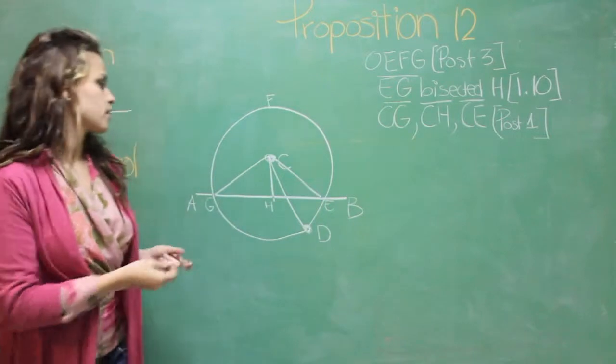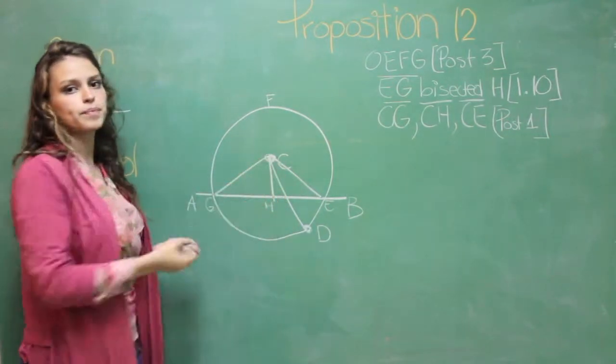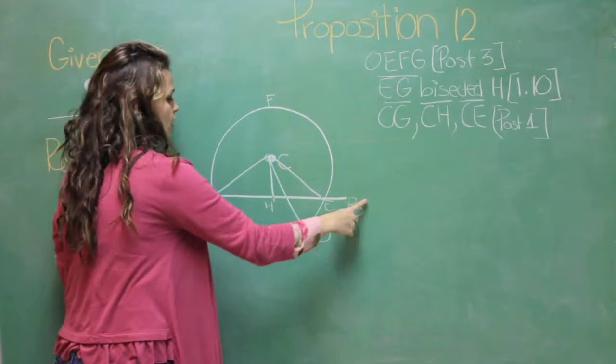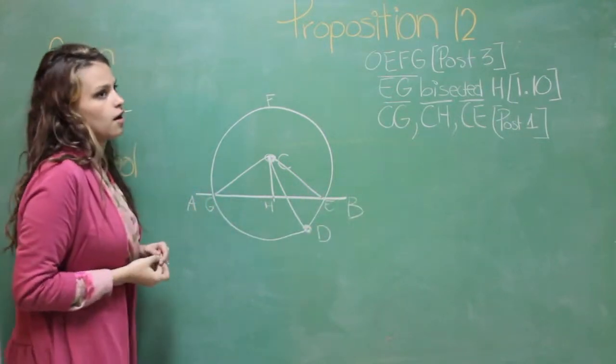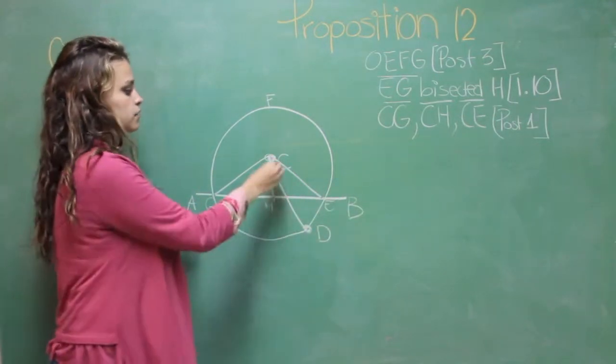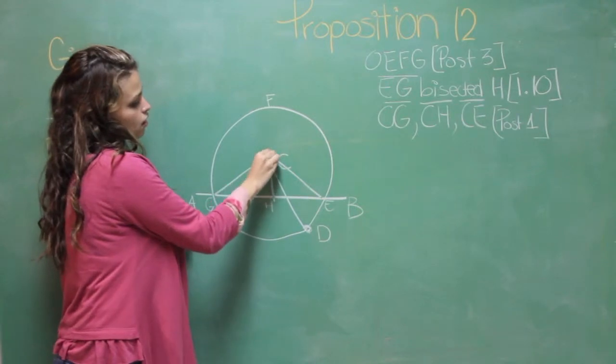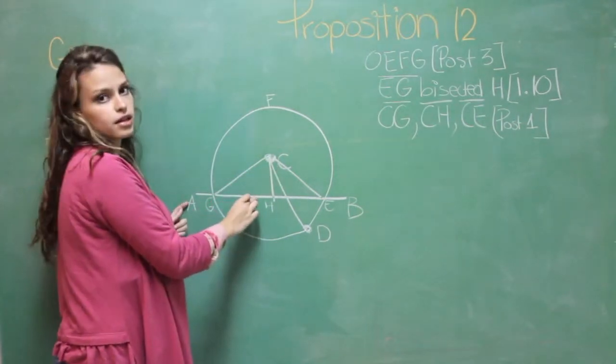I say that CH is perpendicular to the infinite straight line AB, and it has been drawn because of the point C that is not on the line.